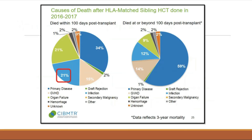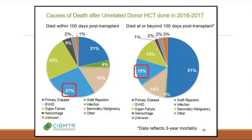Infection is one of the biggest reasons transplant patients die. For matched related donors, there is still significant death related to infection within 100 days and beyond. For unrelated donors, within 100 days, infection-related death rate is actually higher than for any other cause. Because of this data, the BMT ID service has the ability to advocate strongly for specific recommendations to primary teams — at Moffitt, recommendations are implemented approximately 98% of the time.